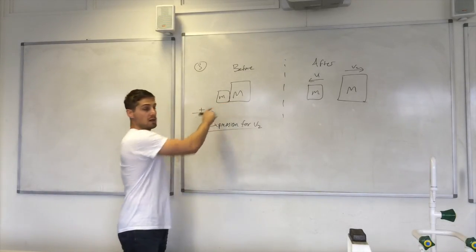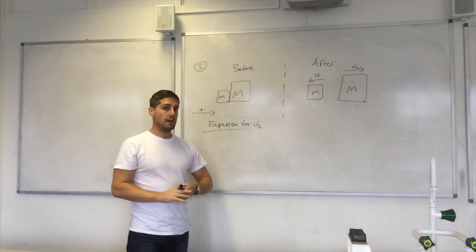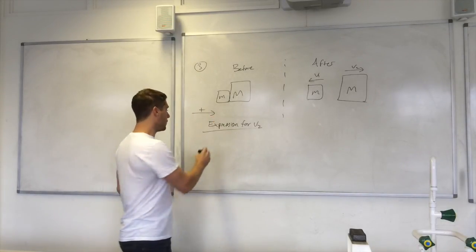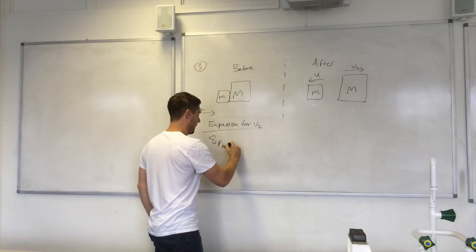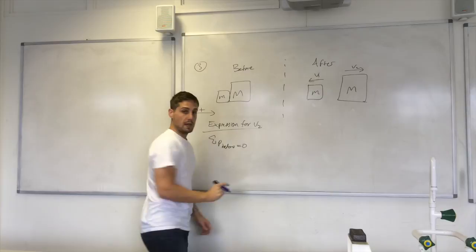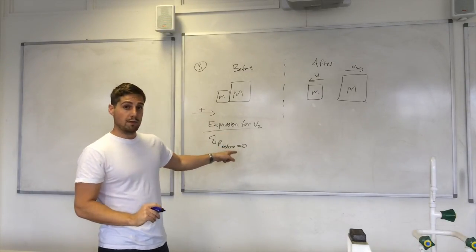First thing is to look at the situation before. Neither object is moving. They're both stationary. So therefore, the total momentum before equals zero. Very important. Total momentum before is zero. And that actually tells us that the total momentum after will be zero.